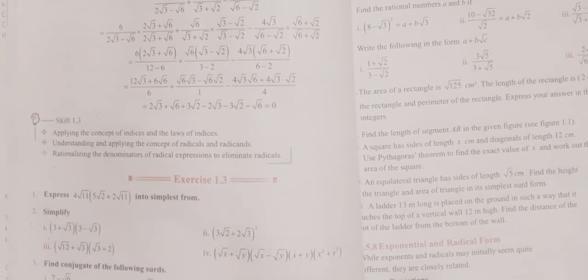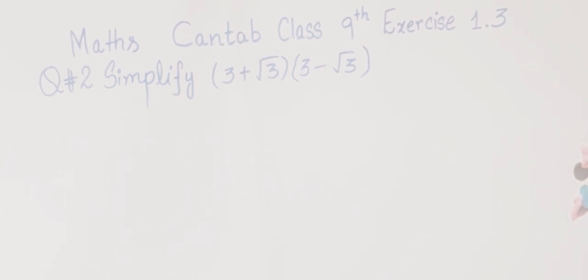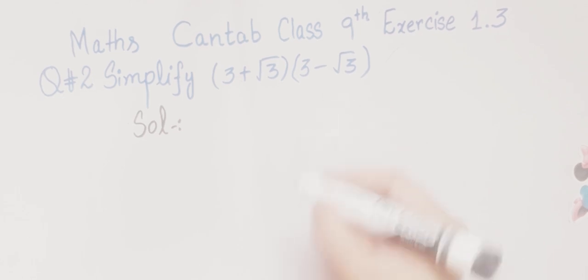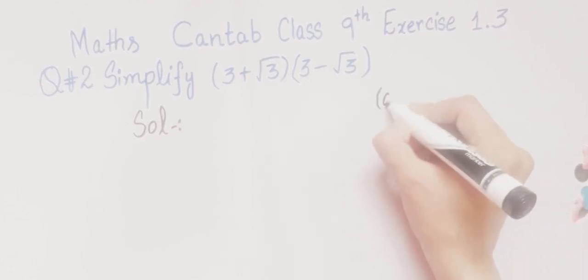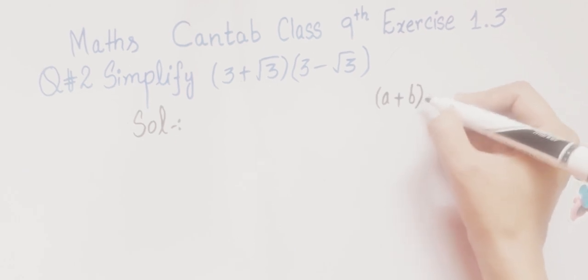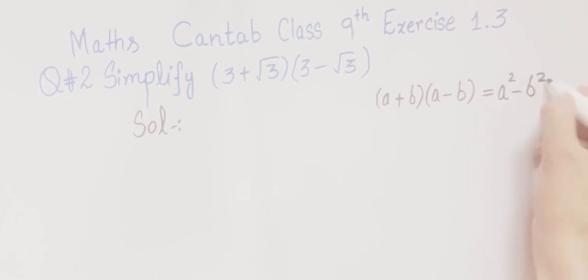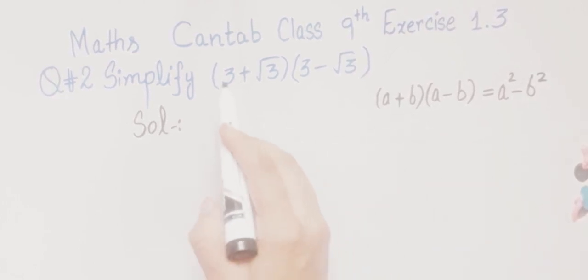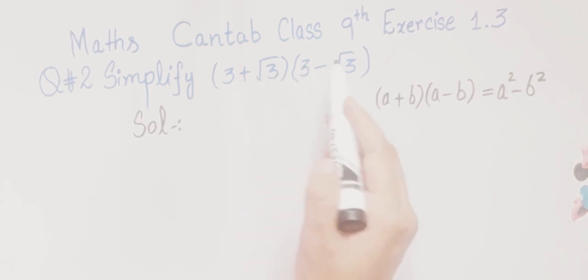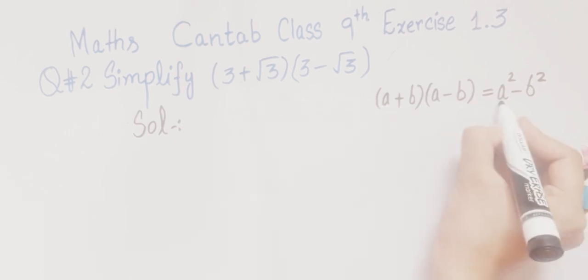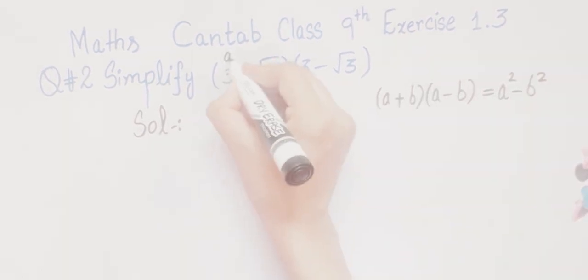Question Number 2 says simplify. The first part is (3 + √3) into (3 - √3). We will solve this. We know that (a + b)(a - b) is equal to a² - b². We can see that this is of the form a plus b and a minus b, so we will apply this formula here.